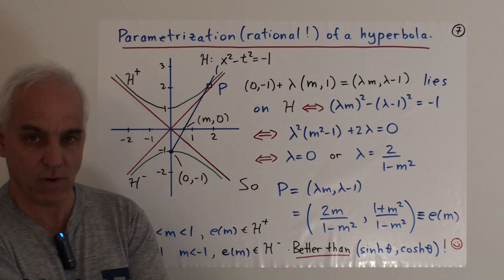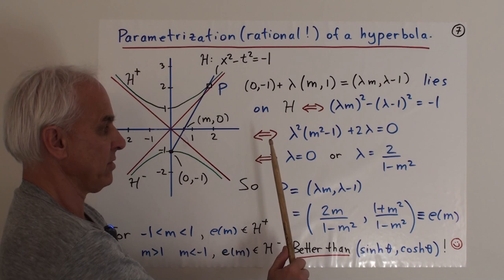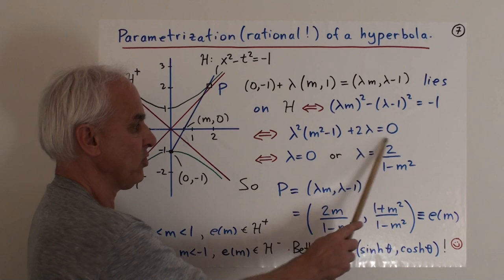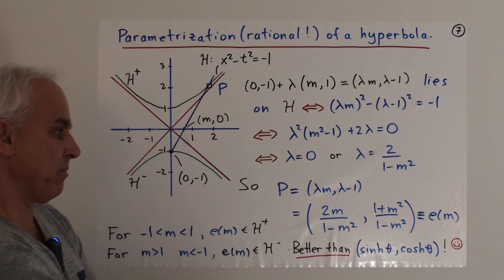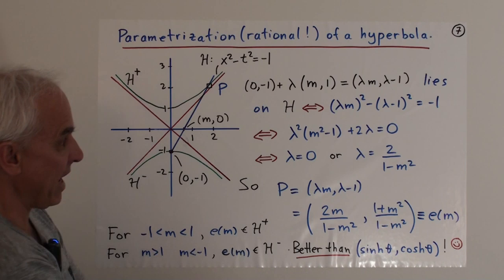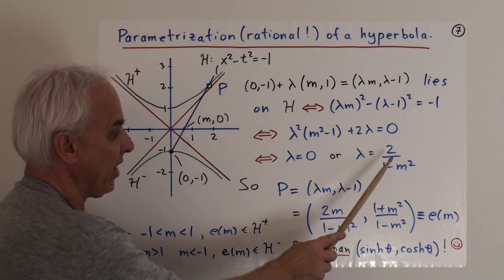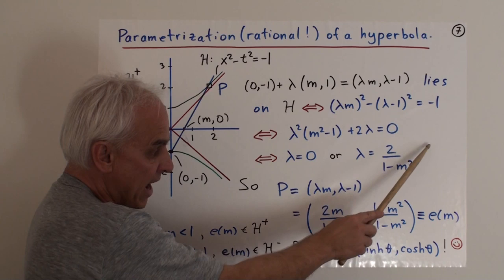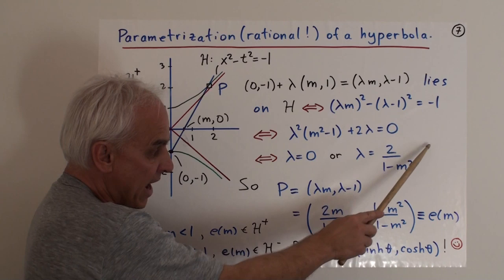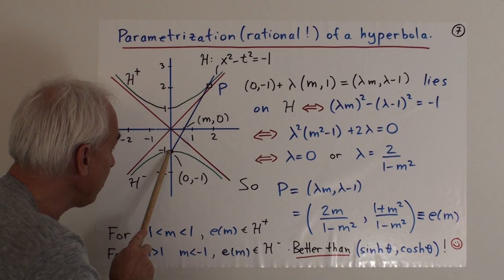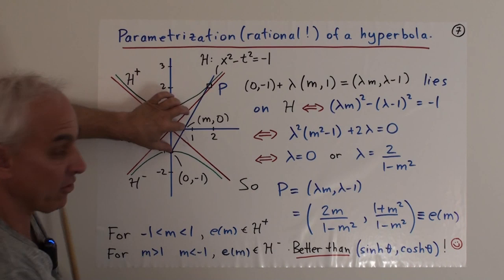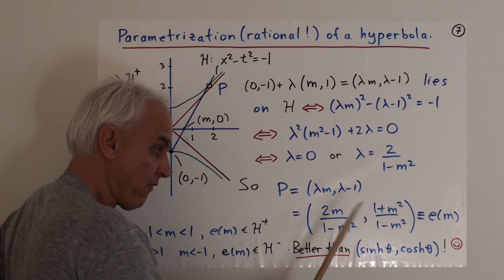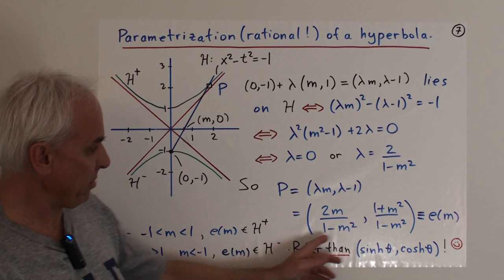We're going to start with a point on the hyperbola — we'll choose this point down here (0, -1). We'll choose a parameter M on a convenient line, so that's the point (M, 0). We'll join (0, -1) to (M, 0) and see where that line meets this hyperbola. Doing the linear algebra: here is the point (0, -1) as a vector, and the vector from this point to (M, 0) is M, 1. We want to add a multiple λ of that vector to (0, -1) to get a point on the hyperbola. That point is (λM, λ-1), and we require it to satisfy x² - t² = -1. Expanding and simplifying, we find that either λ = 0 or λ = 2/(1 - M²).